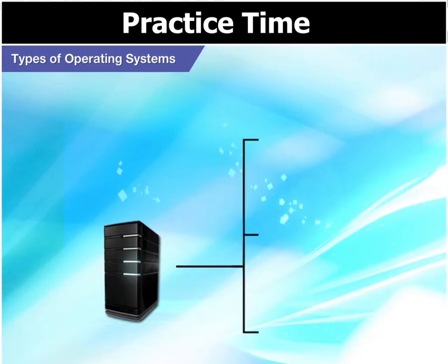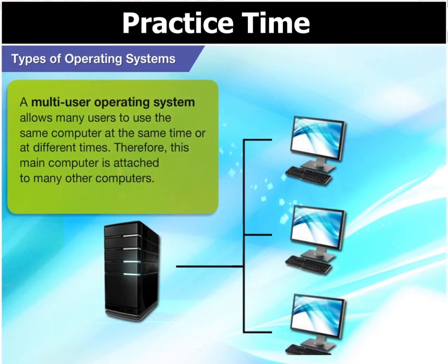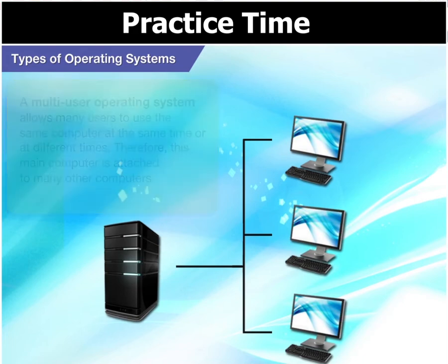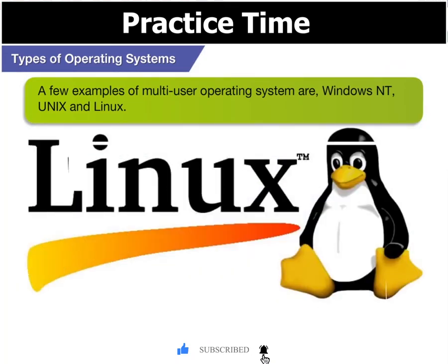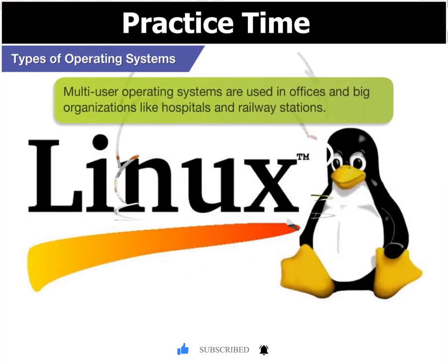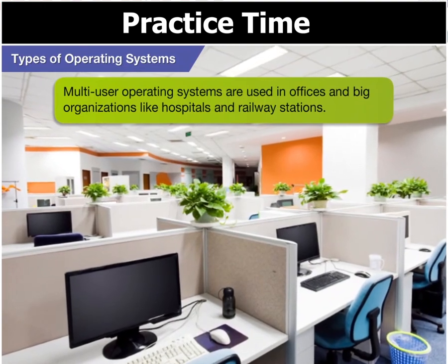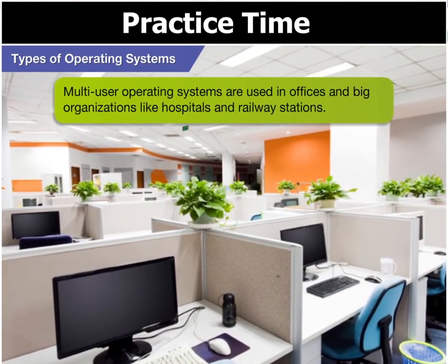What's a multi-user operating system? A multi-user operating system allows many users to use the same computer at the same time or at different times. Therefore, this main computer is attached to many other computers. A few examples of multi-user operating systems are Windows NT, Unix and Linux. Multi-user operating systems are used in offices and big organizations like hospitals and railway stations.